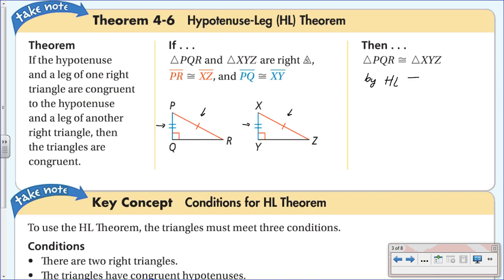Anytime you have two right triangles where a leg in each triangle is marked congruent and the hypotenuses are marked congruent, those two right triangles are congruent by the hypotenuse-leg theorem. Once you prove them congruent, the third side is congruent, corresponding angles are congruent — all corresponding parts are congruent, as we learned in the last video.